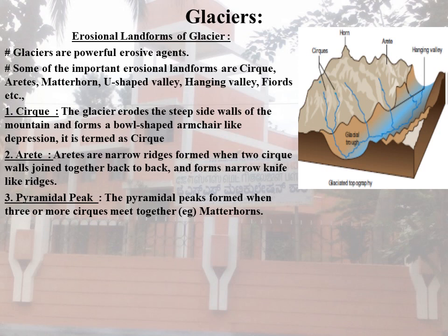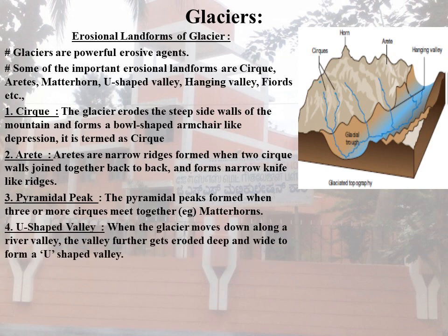The third one is Pyramidal Peak. Pyramidal peaks are formed when three or more cirques meet together. An example is the Matterhorn. As shown in the pictures on the right side, cirques, pyramidal peaks, and U-shaped valleys are all illustrated. The fourth one is U-shaped Valley: when glaciers move down along a river valley, the valley gets further eroded deep and wide to form a U-shaped Valley.